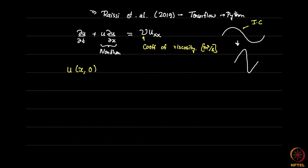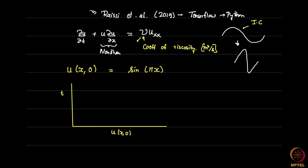So when you write the initial condition, you would write u(x, 0) as some function — let's say sine of πx. I will show you the exact function the researchers used, which is what we will be using in our code. We will also use some specific value of mu that the researchers used. But that is not sufficient — if we simply say u(x, 0) is given, we want the solution in time, so we need some boundary conditions as well.